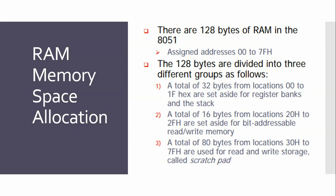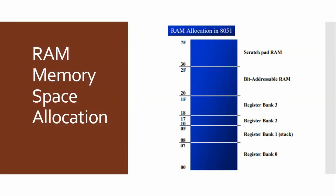These 32 bytes are used for register banks and the stack. The next group is a total of 16 bytes, from location 20H to 2F hexadecimal, and they are bit-addressable for read and write. The third group is a total of 80 bytes, from location 30H to 7F hexadecimal, used for read and write storage — also called the scratch pad.